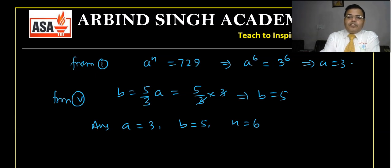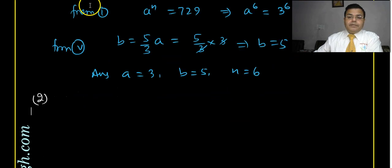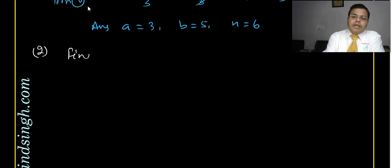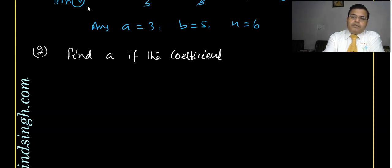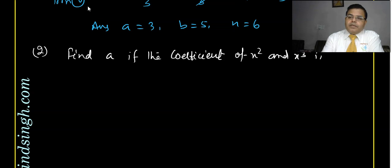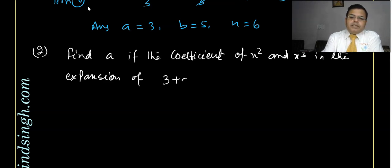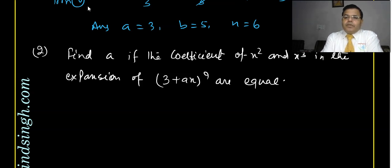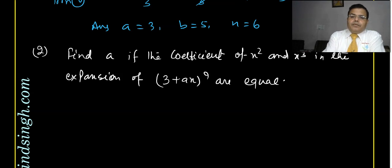Now the second question: find 'a' if the coefficients of x² and x³ in the expansion of (3 + ax)^9 are equal.